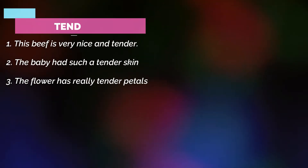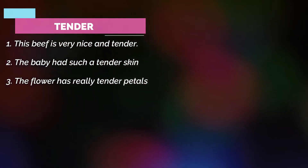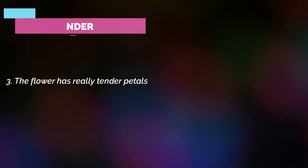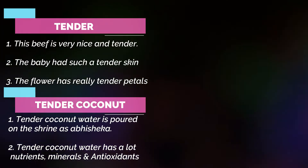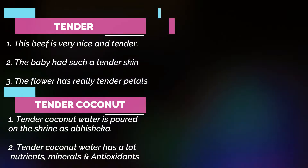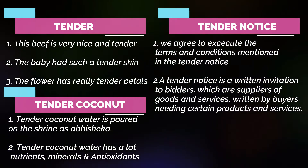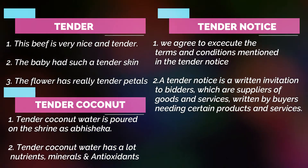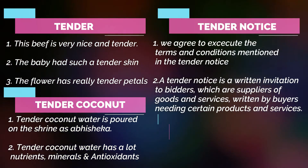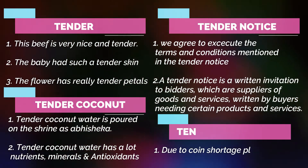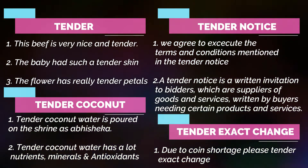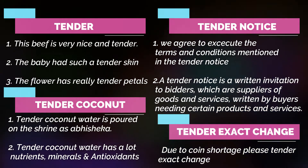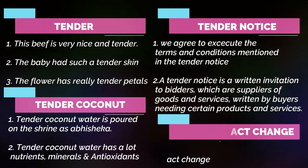So to summarize: the first meaning of 'tender' is 'ilasaana' or 'mridhu vana' (soft/delicate). The second is 'tender coconut' meaning 'ilaa neer.' The third is 'tender' in the sense of open the pulley. And the fourth meaning is 'tharavum' — sariyana sillurai, meaning exact change.